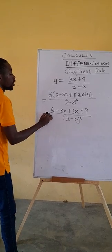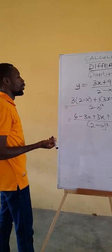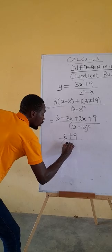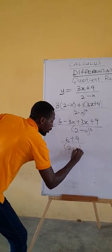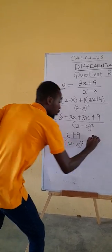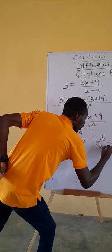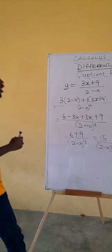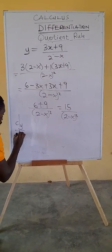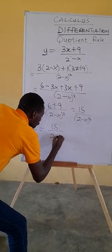Now we simplify: expanding gives us 6 minus 3x, plus 3x plus 9, all over (2 minus x) squared. The minus 3x and plus 3x cancel, and 6 plus 9 equals 15, so we get 15 all over (2 minus x) squared.